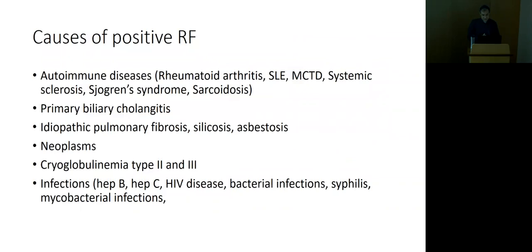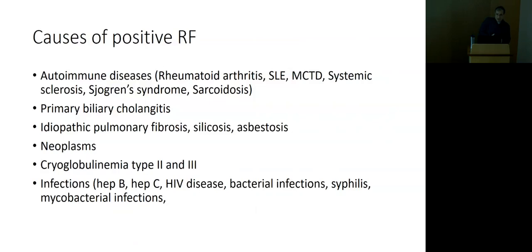Positive rheumatoid factor is one of the minor Duke criteria for endocarditis. Understanding why RF is elevated — because it removes immune complexes — helps you understand which diseases elevate it. Once you know what it does, you can predict which diseases will be on the list.